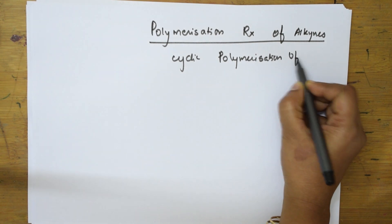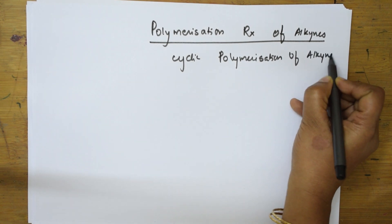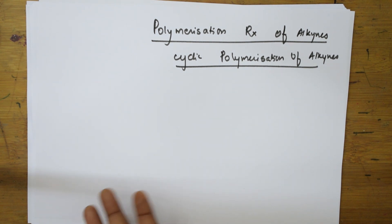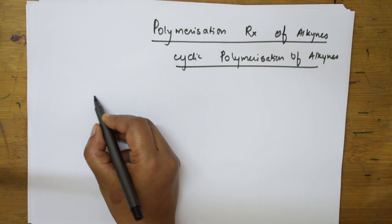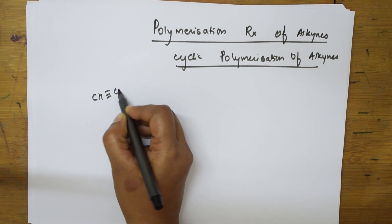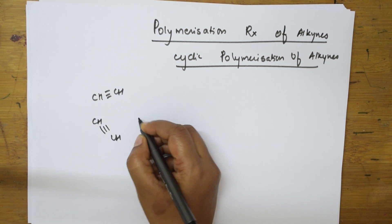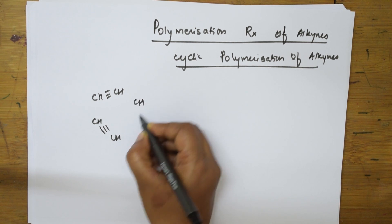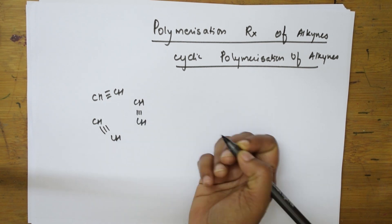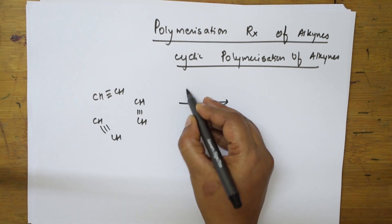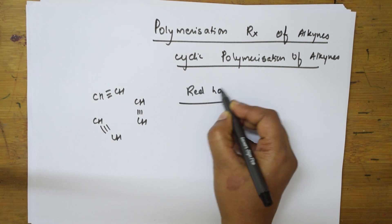Cyclic polymerization of alkynes. The basic alkyne here is acetylene. What is a polymer? Basically, it is the combination of monomers to form a long chain polymer — polymer means many units. Suppose if I take three moles of acetylene and introduce this in a red hot iron tube.